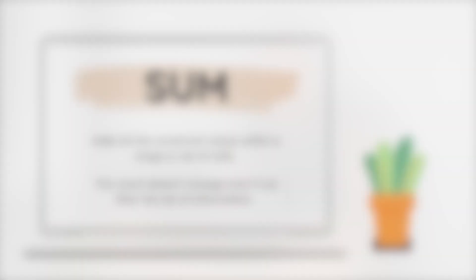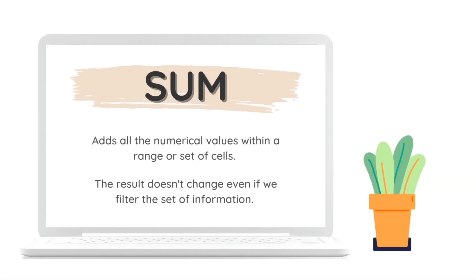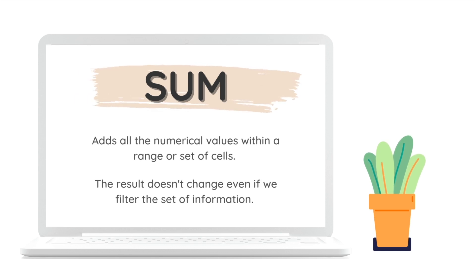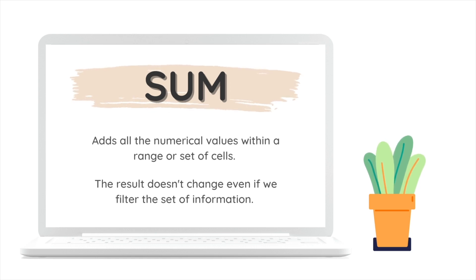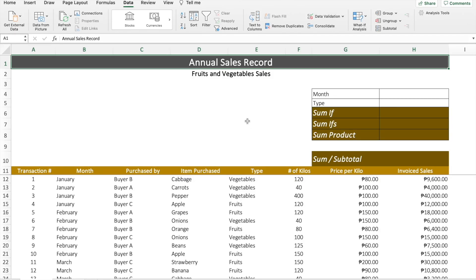The first function we can use to meet the objective is the SUM function. The SUM function basically adds all the numerical values within a range or set of cells. With the SUM function, the result doesn't change even if we filter the set of information. So this is a sum of all sales records.